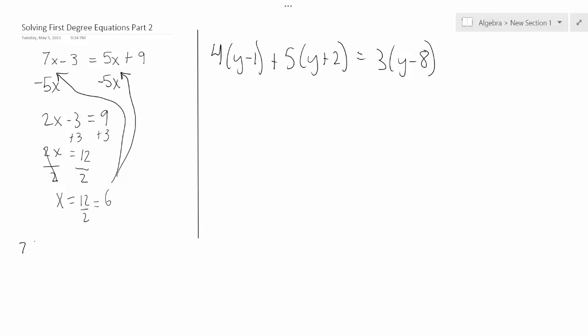You're going to get 7 times 6 minus 3 equals 5 times 6 plus 9. Here you'll get 42 minus 3 equals 30 plus 9, and 39 does indeed equal 39.